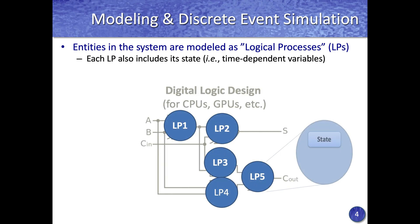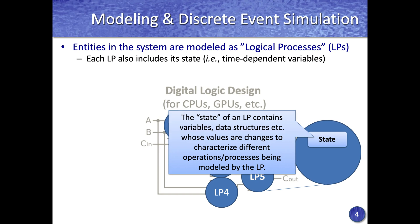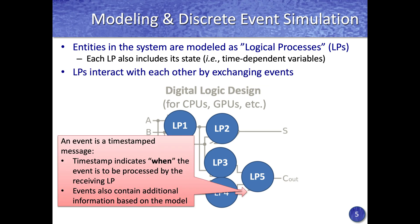These logical processes model the temporal characteristics of the system under study, and each logical process has a state that contains variables and data structures used to model different properties of the system. The logical processes interact with each other by exchanging timestamped events, where the timestamp indicates when the event is to be processed by the receiving logical process.